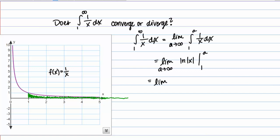So then this is the limit as a goes to infinity of the natural log of the absolute value of a minus the natural log of the absolute value of 1. So I can go ahead and actually evaluate the natural log of 1. Again, I should know that that is 0. So then I end up with the limit as a goes to infinity of the natural log of the absolute value of a.